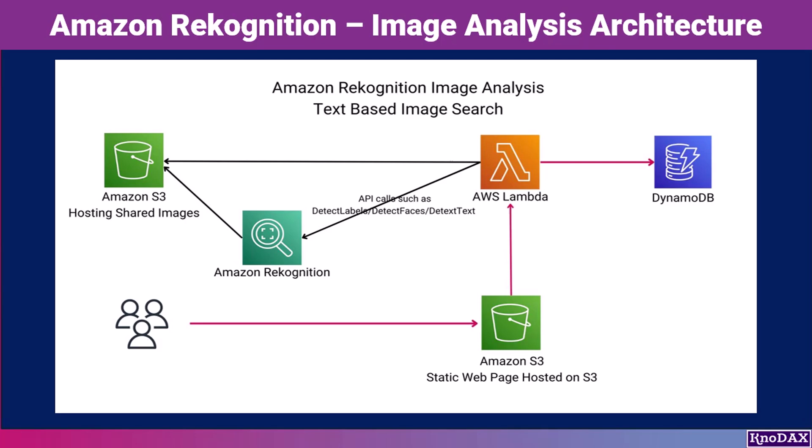The Lambda function can store metadata or insights into DynamoDB for fast retrieval. Meanwhile, a static web page hosted on S3 allows users to perform text-based image searches, view results, and interact with the application. This architecture is serverless, highly scalable, and cost-efficient because it relies on AWS-managed services.